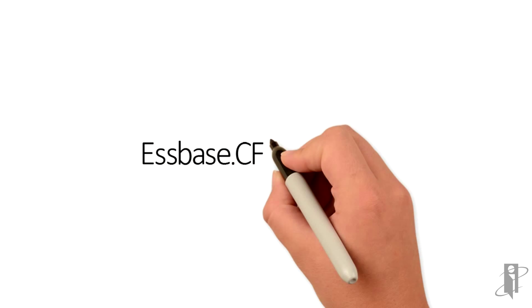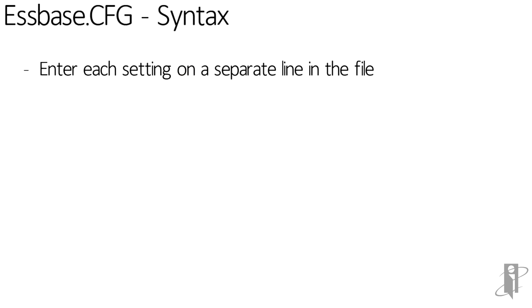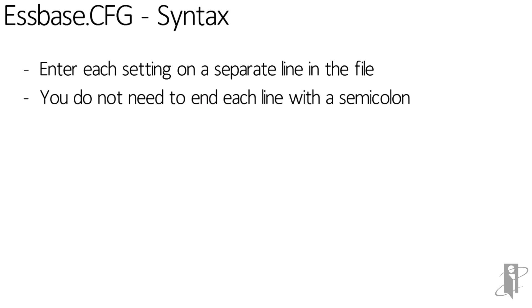There are only a couple of syntax rules to follow when updating the sspace.cfg. First, put each setting on its own separate line in the file — just press Enter at the end of the line. You don't need a semicolon at the end; it knows that a return key means move to the next setting. Blank lines in the file are fine — if it encounters a line it doesn't recognize, like a blank line, it just skips it and goes on to the next one.